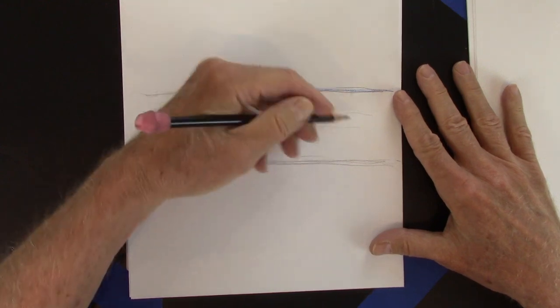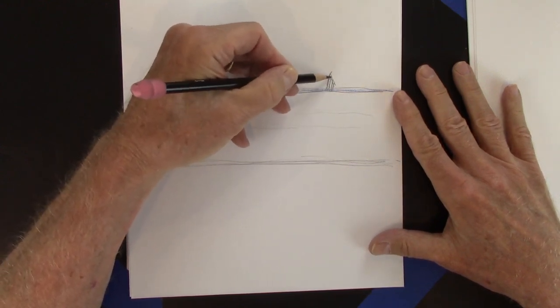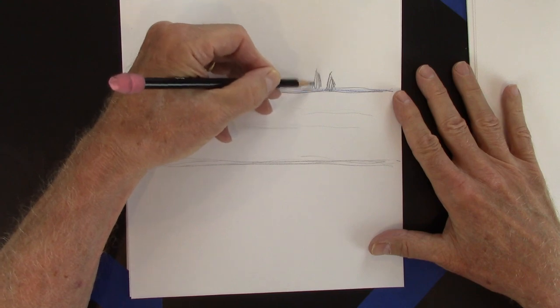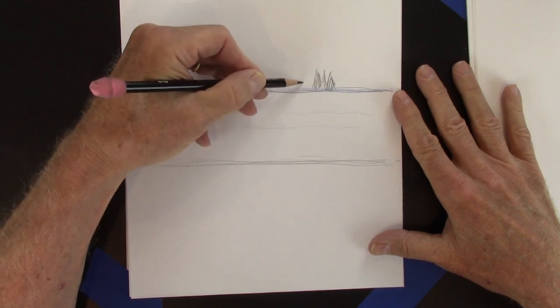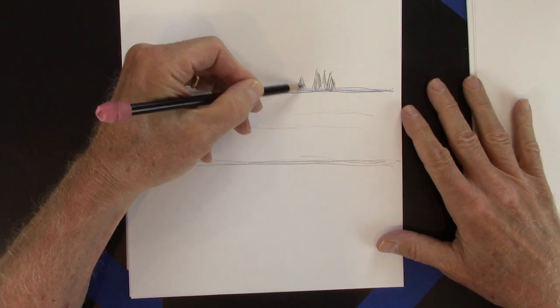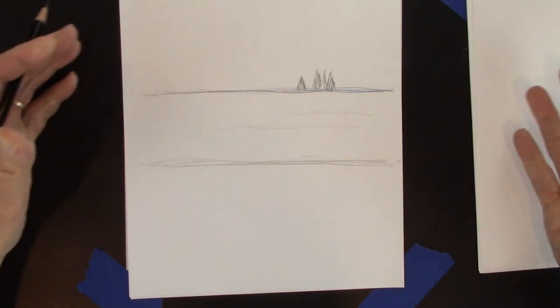And over here, let's say, we add a few smaller trees. Like that. Show the distance between the front and the back. See, that's distance. There's no vanishing line involved.